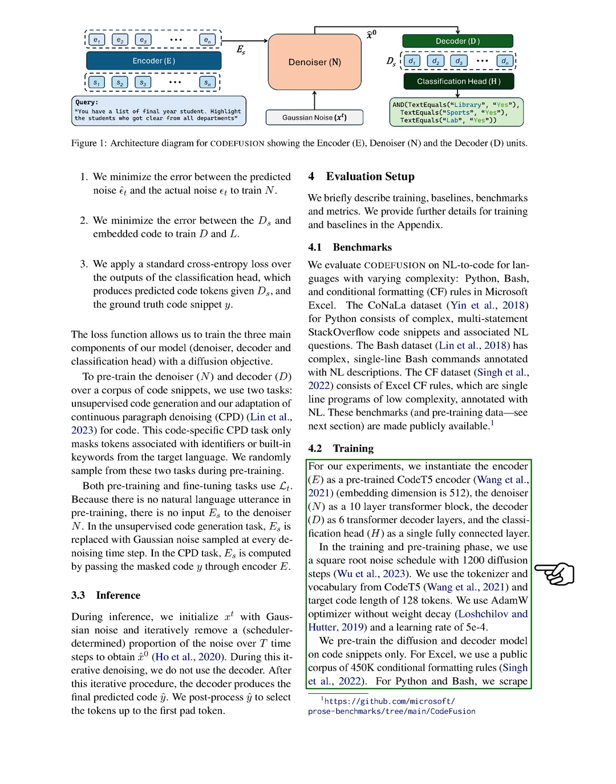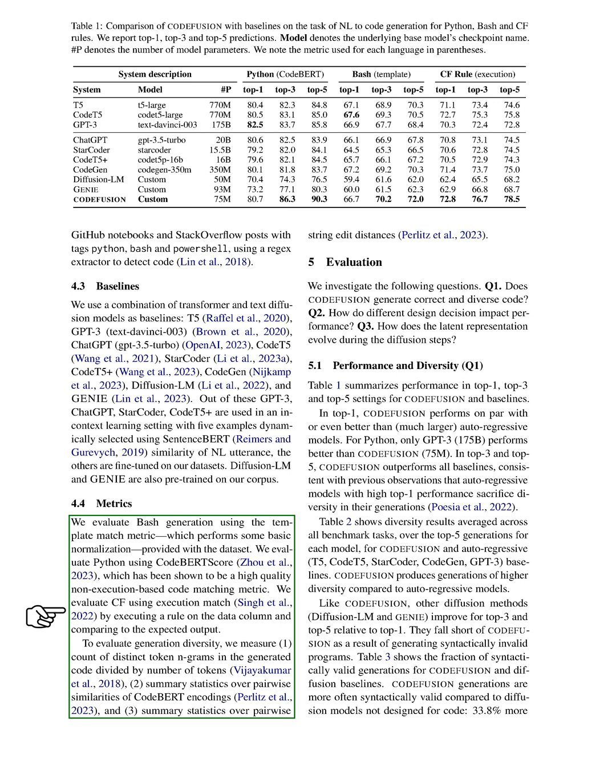We evaluate our system using various metrics. For Bash, we use the template match metric; for Python, we use the pass@k metric; and for Excel, we use execution match.